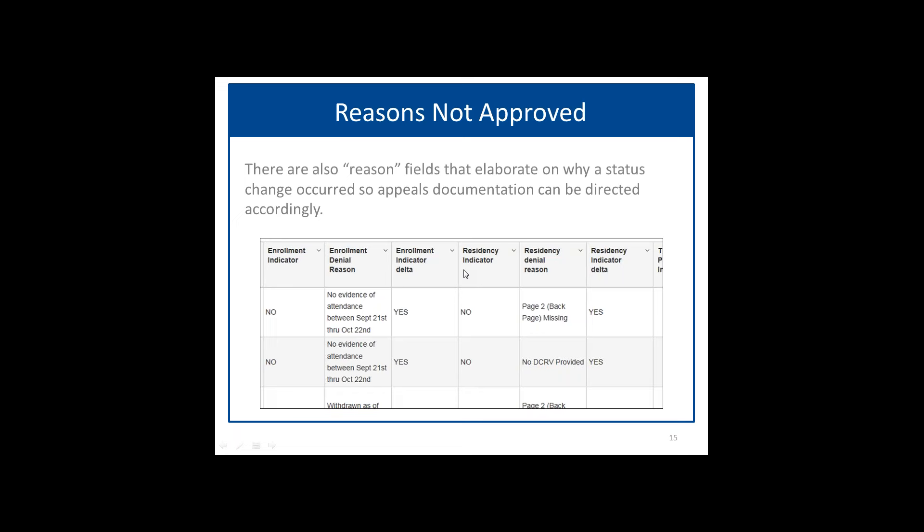Question: do the FARMS fields in the audit data take into account whether the school is eligible for community eligibility? The field called economically disadvantaged definitely does take that into account. Economically disadvantaged combines direct certification, FARMS information provided by the LEA, and community eligibility. The FARMS information is self-reported by the LEA through the Student Information System. If the LEA has marked all their students free because they're a community eligible program, then yes, it would take it into account in the FARMS field.